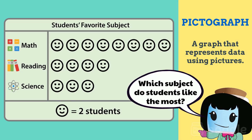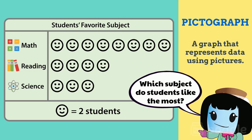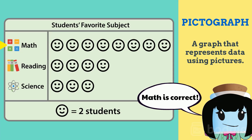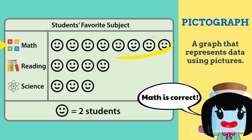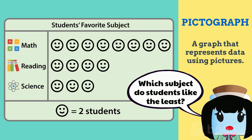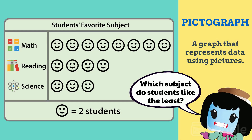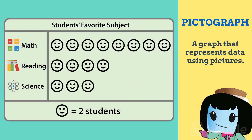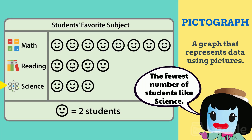Which subject do students like the most? Math is correct — it has the most smiley faces next to it. Which subject do students like the least? Science has the least amount of smiley faces, so the fewest amount of students like it.